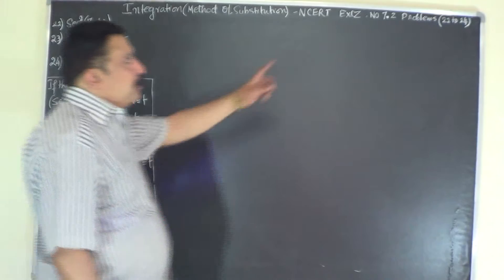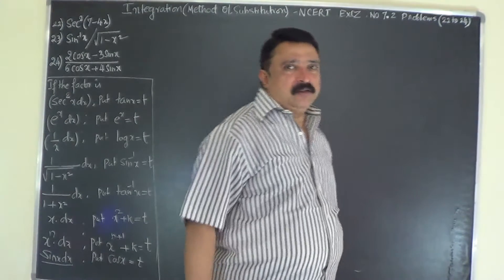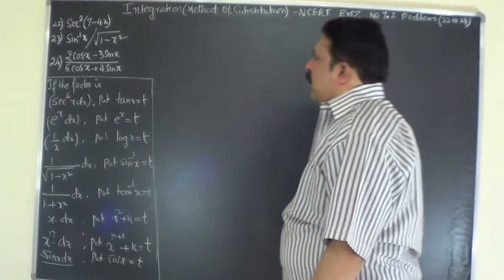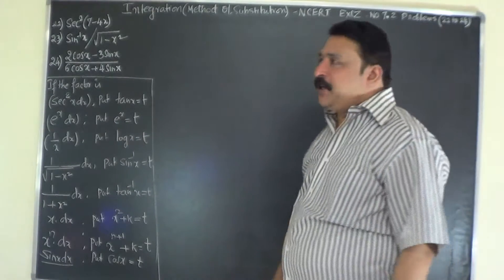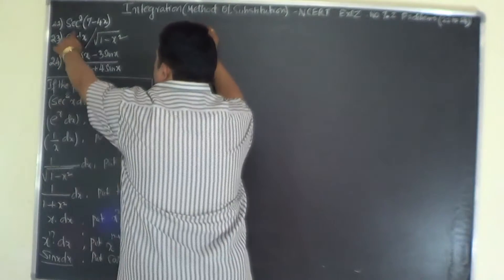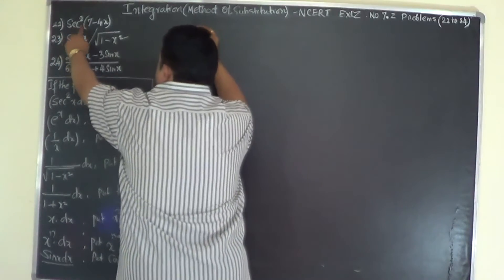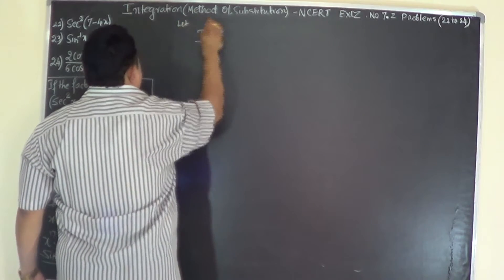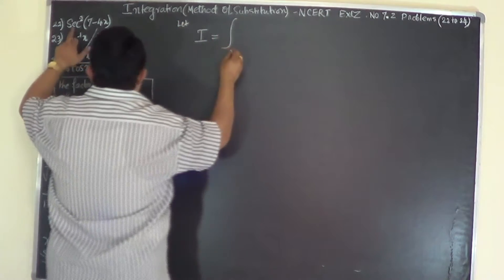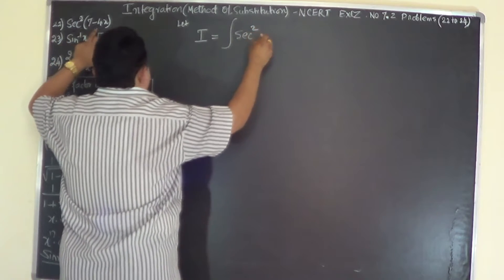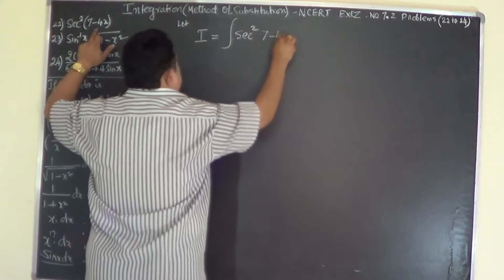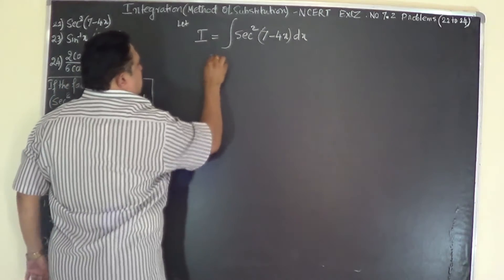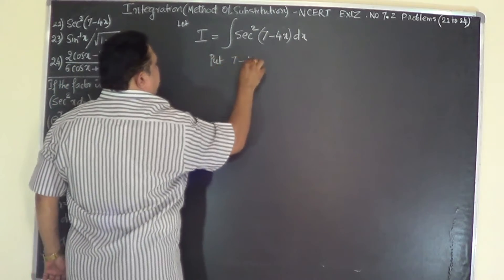Now we will be doing problem numbers 22 to 24 of exercise 7.2 on integration by the method of substitution. Problem number 22: integrate sec²(7 - 4x). Let I be equal to the integral of sec²(7 - 4x) dx.